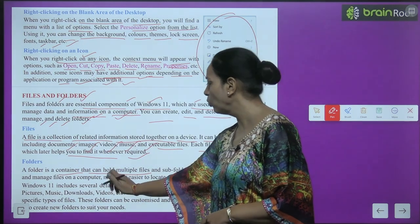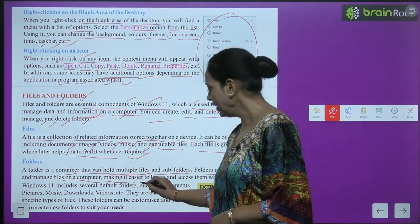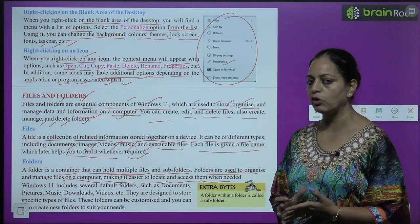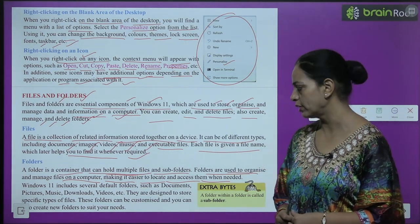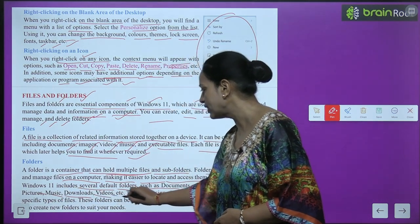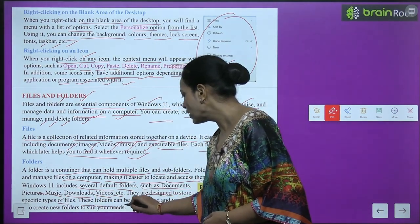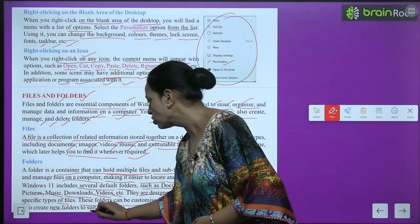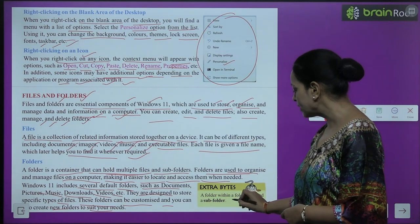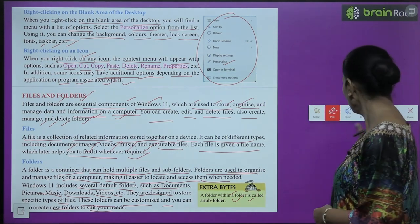A folder is a container that can hold multiple files and sub-folders. Folders are used to organize and manage files on a computer, making it easier to locate and access them when needed. Windows 11 includes several default folders such as Documents, Pictures, Music, Downloads, and Videos — they are designed to store specific types of files. You can also create new folders to suit your needs. Extra byte: a folder within a folder is called a sub-folder.